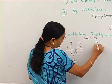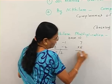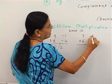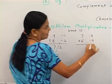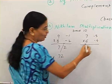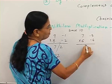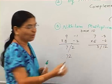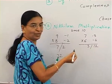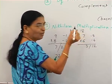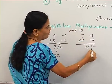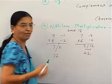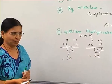Take another example: 7 into 6. The complement of 7 is 3 and the complement of 6 is 4. Then 6 minus 3 equals 3, and 3 into 4 equals 12. Since there can only be 1 digit (one zero in base 10), you carry over 1, so the answer is 42.